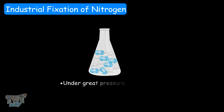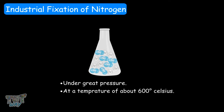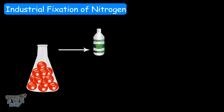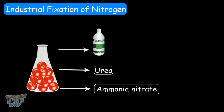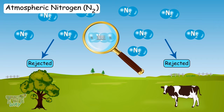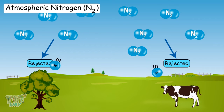Now let's learn the third type: industrial fixation. Under great pressure, a temperature of around 600 degrees Celsius, and in the presence of catalysts, atmospheric nitrogen and hydrogen can be combined to form ammonia. Ammonia can be directly used as fertilizer, and can also be further processed to form urea and ammonium nitrate. So, these are three ways atmospheric nitrogen is fixed, or converted to usable forms for plants and animals.